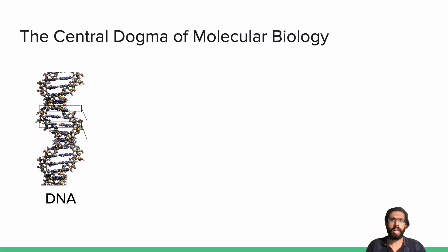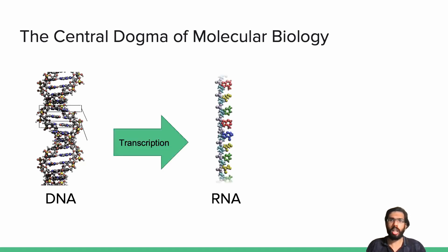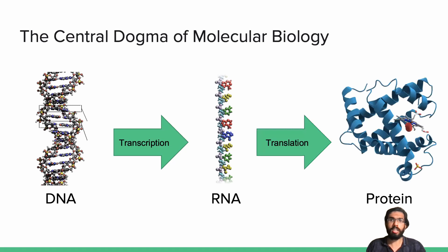As an example, let us imagine we want to build a bicycle. A single gene is transcribed into a special type of RNA called messenger RNA, or mRNA for short, which you can think of as essentially being a photocopy of a single chapter in our book. The mRNA contains a copy of the instructions required for creating a specific protein. Finally, the RNA is translated into proteins, which is the functional unit of molecular biology.